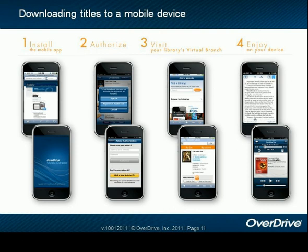Speaking of Android, we do offer a mobile app. To use the mobile app, your users will first need to install it. They can find it in their device's app store by typing 'OverDrive Media Console' into the search bar — it is free. After installing, they will be prompted to authorize with an Adobe ID. After authorizing, they will be able to visit your library's virtual branch website right from their device, where they can browse, check out, and download titles to enjoy right on their device.